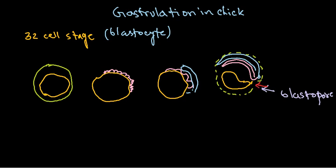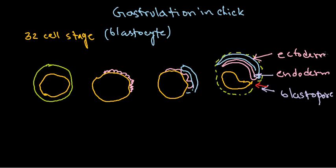We see two different types of layers start to form. The first layer that started to form on the surface of the yolk sac is termed the endoderm. The second layer, which starts to form on the surface of the endoderm, is called the ectoderm. But where does the middle layer come from? We know there is obviously a middle layer.